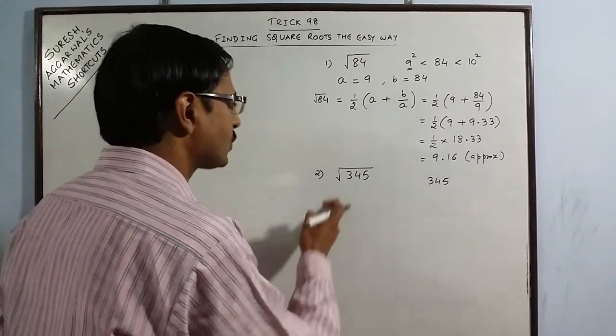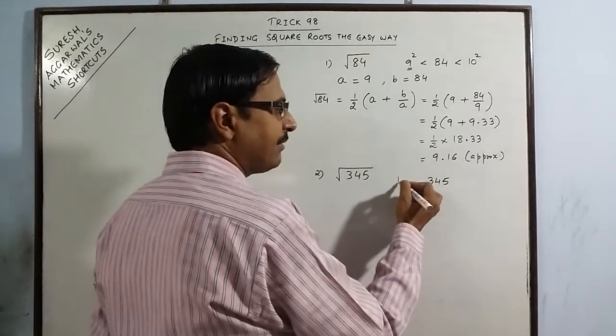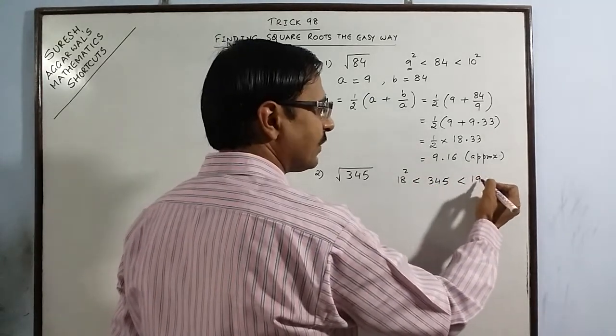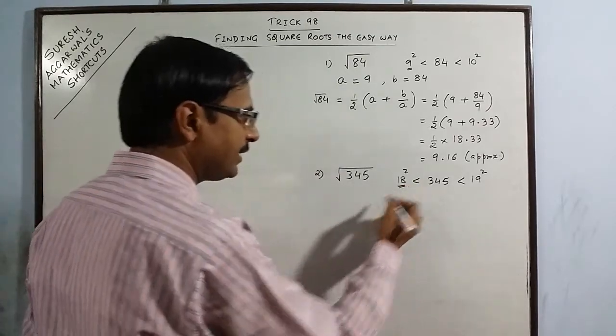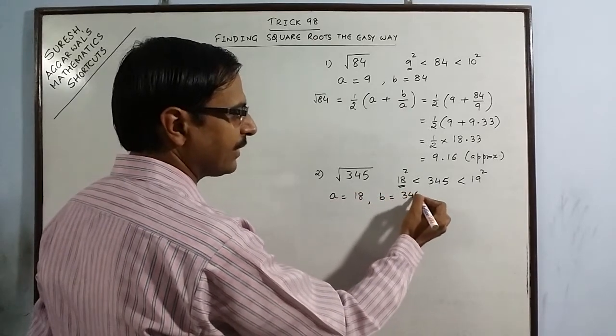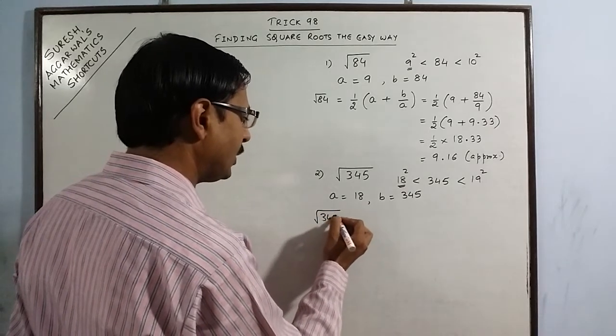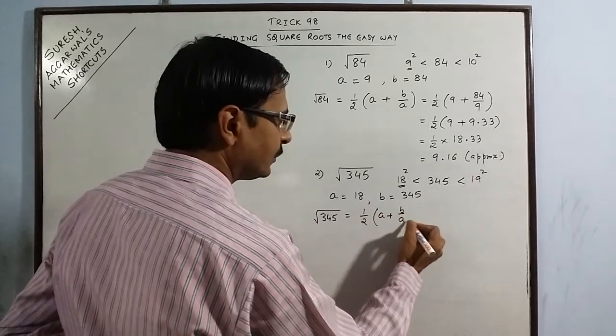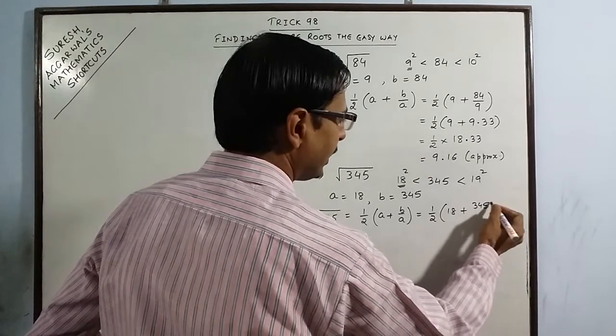then you can easily find out square roots of numbers up to 1000. So here we have 18 squared is 324, so the value of a here comes out to be 18 and the number itself 345 is considered as b. Now the square root of 345 will be obtained by half of a plus b upon a, that is half of 18 plus 345 upon 18.